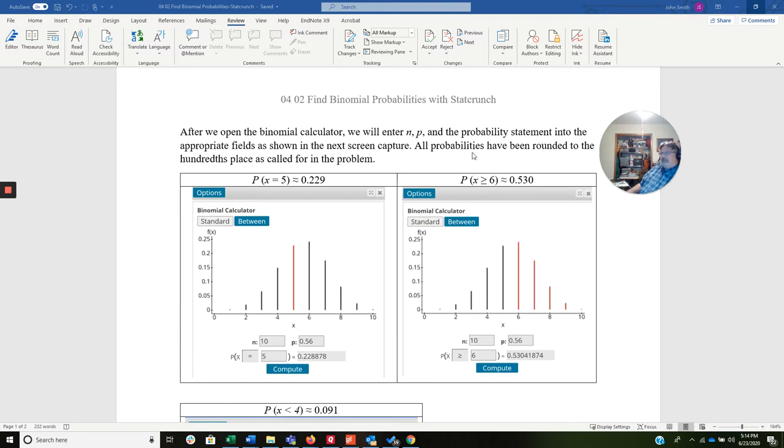Actually, there's three screen captures here. All probabilities have been rounded to the hundredths place as called for in the problem. So the first one is probability of X equals 5. So I entered the N here. The P equals 0.56 here. X, I changed the sign here, equals 5, 0.2288, and that's going to round to 0.229.